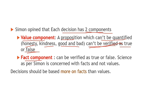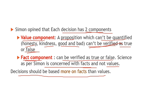Fact components can be verified as true or false. Science as per Simon is concerned with facts and not values. Fact components woh part hota hai ek decision ke, jo ki verify kiya ja sakta hai ki woh sahih hai ya galat — unko hum quantify bhi kar sakte hai ya measure bhi kar sakte hai. Simon ke according science jo hota hai woh bhi facts par based hota hai, na ki values ya mulyoon par. So Simon ka maanna tha ki decisions should be based more on facts than values.